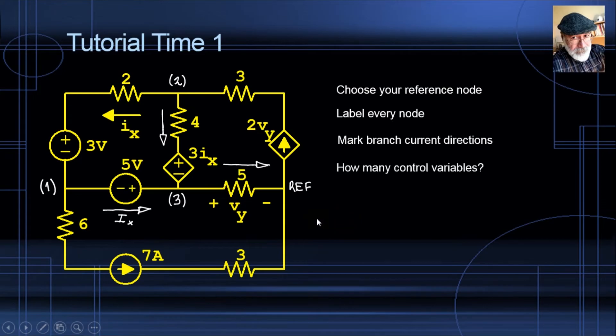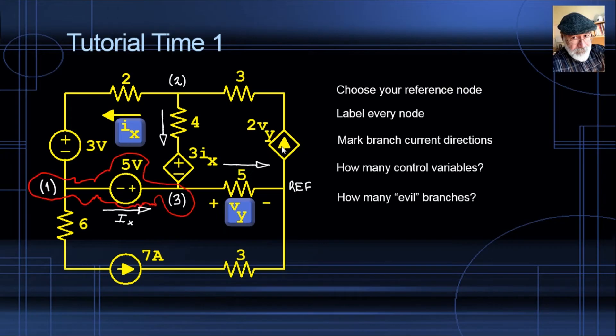How many control variables? Identify and count your control variables. Here is one, Ix. You see it controls the V source in the center. And Vy, it controls this current source on the right. So we're going to need two CTL equations. How many evil branches? This one. So we're going to need one evil equation. Now we know that we will have two CTL equations, one evil equation, and three KCL equations, one for each node, but never for the reference. Let's write those equations.